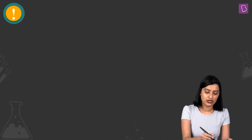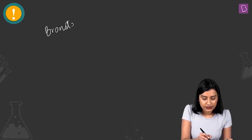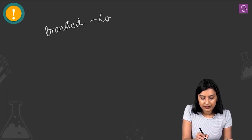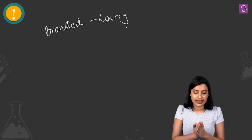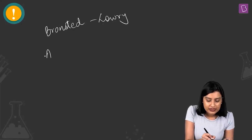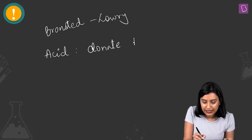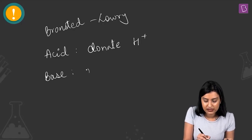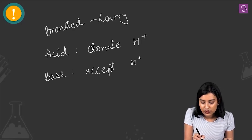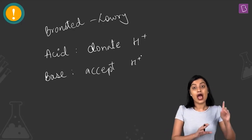Let's discuss the Bronsted-Lowry theory of acids and bases. According to this theory, if a substance needs to act as an acid it should be able to donate a proton, and if it needs to behave as a base it should be able to accept protons.